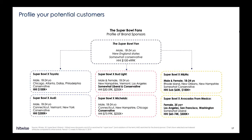Sponsors can also profile their potential customers to see if they are attracting and growing a new set of customers. Here we see that while Super Bowl fans were more likely to be male, 18 to 24 years old, and from New England states, each sponsor attracted a different audience profile within this category. As an example, Avocados from Mexico skewed more towards 35-plus-year-old women.